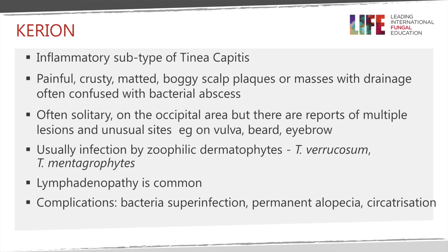The severest form of the inflammatory type is the kerion. It presents as a painful, crusty, matted, boggy scalp plaque with drainage and several sinus tracts. When touched, the skin overlying the scalp feels separated from underlying tissue — almost like an abscess. It is most often solitary and located in the occipital area, but has been reported in unusual sites such as the vulva, beard, or eyebrow. It is caused by zoophilic dermatophytes, and lymphadenopathy is very common.